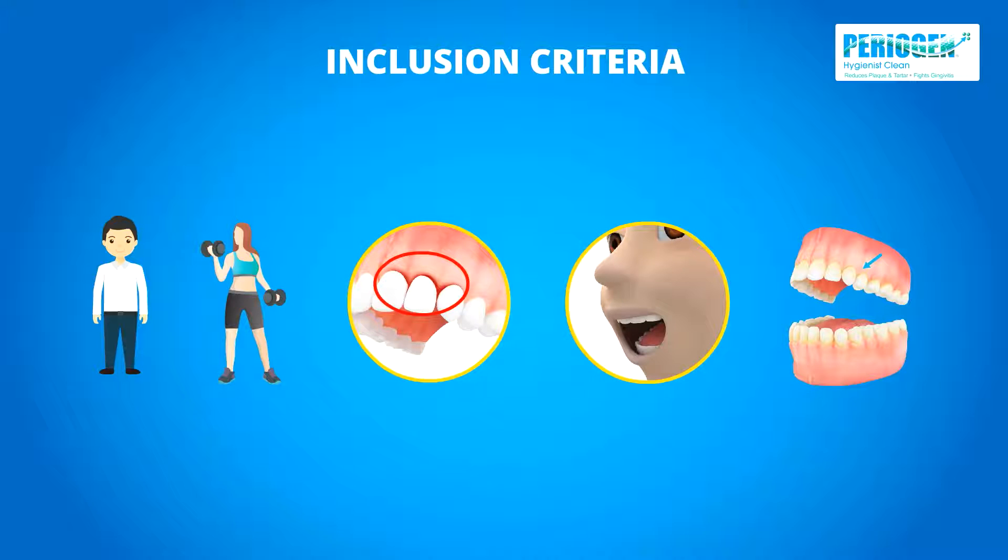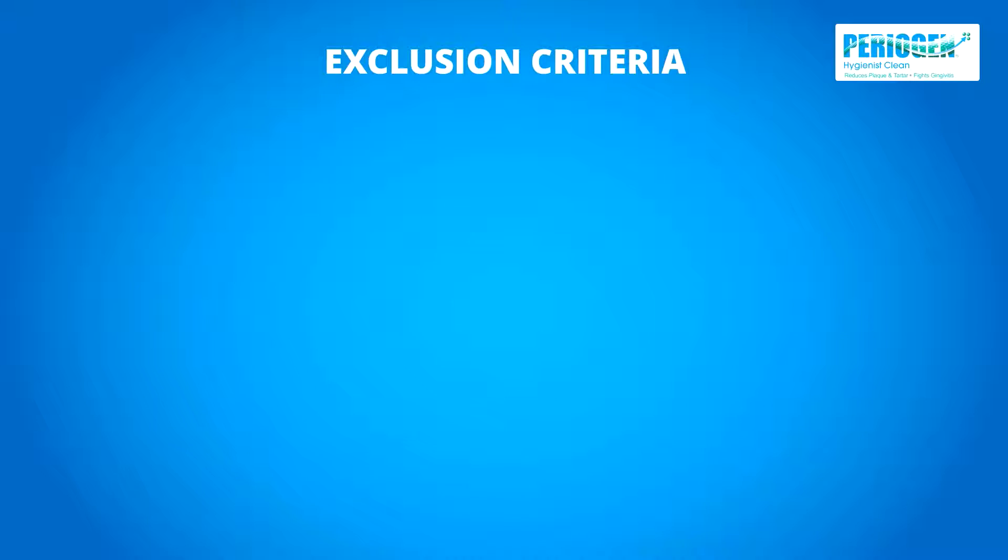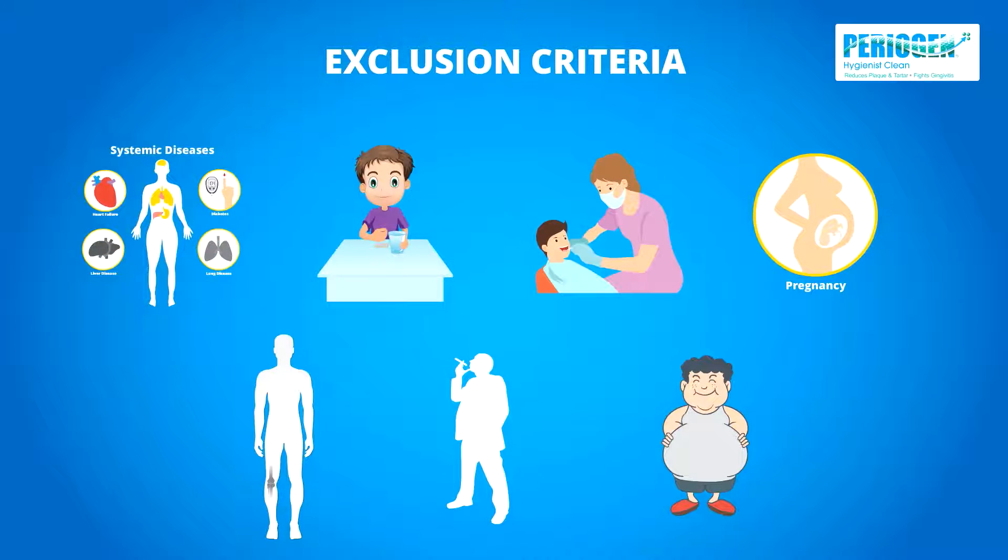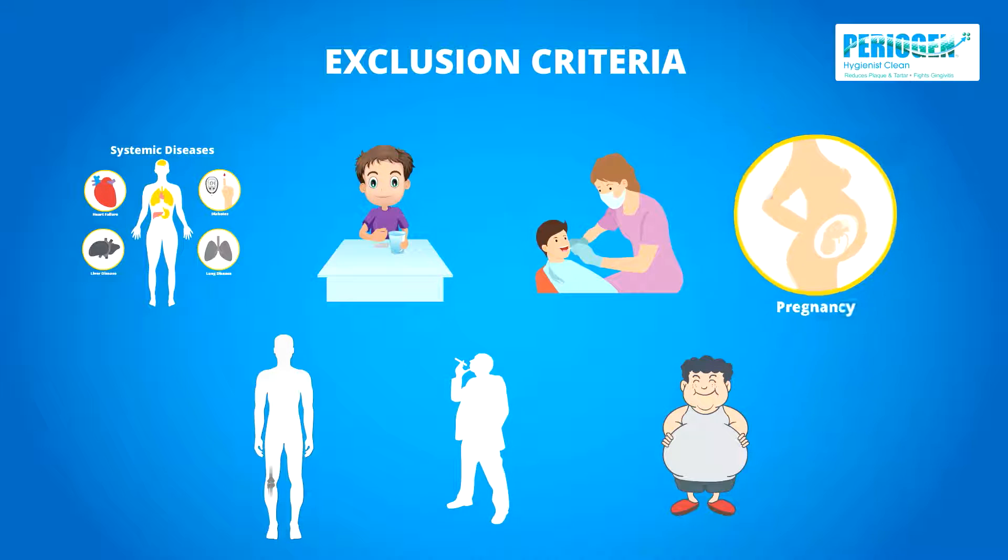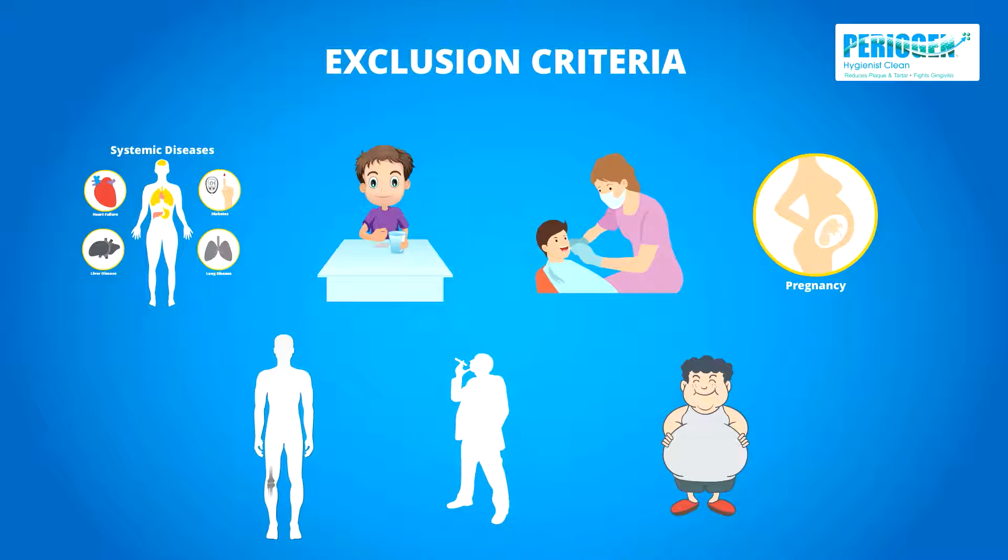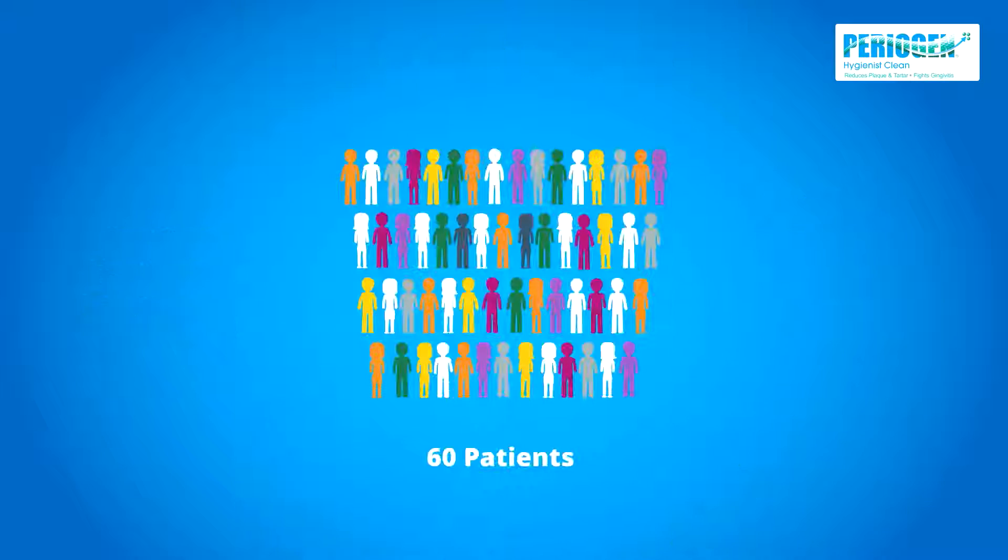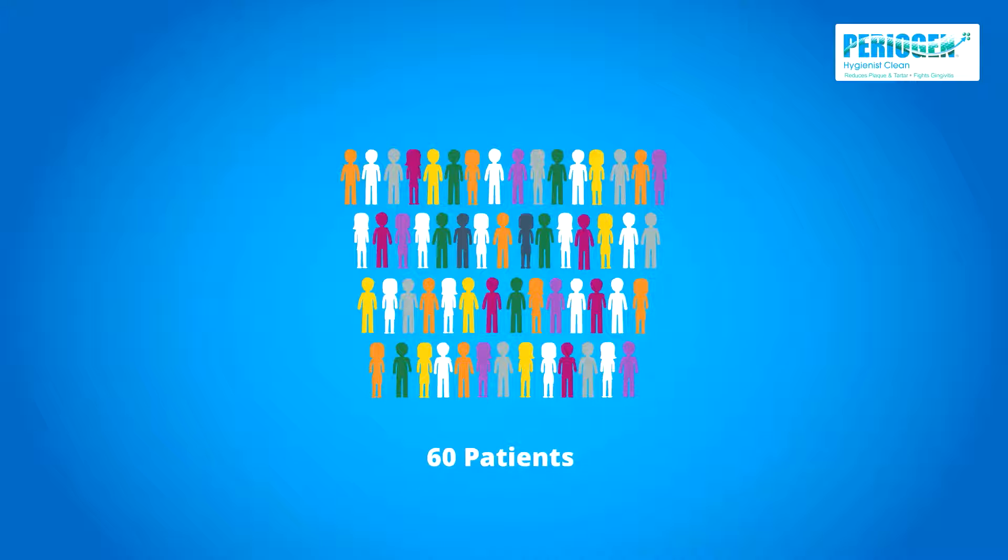Exclusion Criteria: Presence of any systemic diseases, patients who are taking antibiotics, patients who have received periodontal treatment in the past 6 months, pregnant or lactating women, patients with artificial prosthesis, patients who smoke or consume tobacco in any form, and patients who are obese.